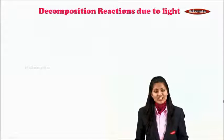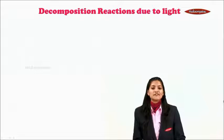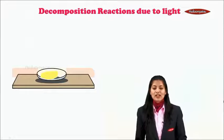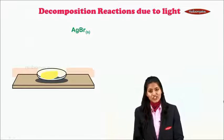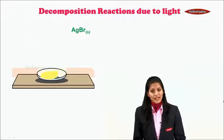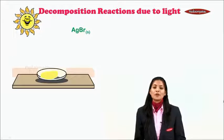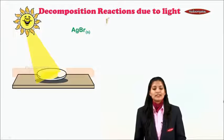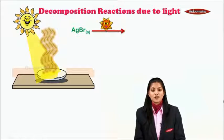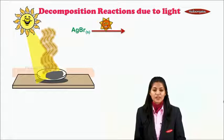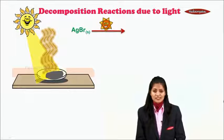Moving on to the second type of decomposition reaction — decomposition due to light. For this, we take a china dish containing a yellow colored substance which is AgBr, also called silver bromide. When silver bromide is kept exposed to sunlight, we observe the formation of vapour along with a change of color from yellow to grey — formation of a grey colored substance.